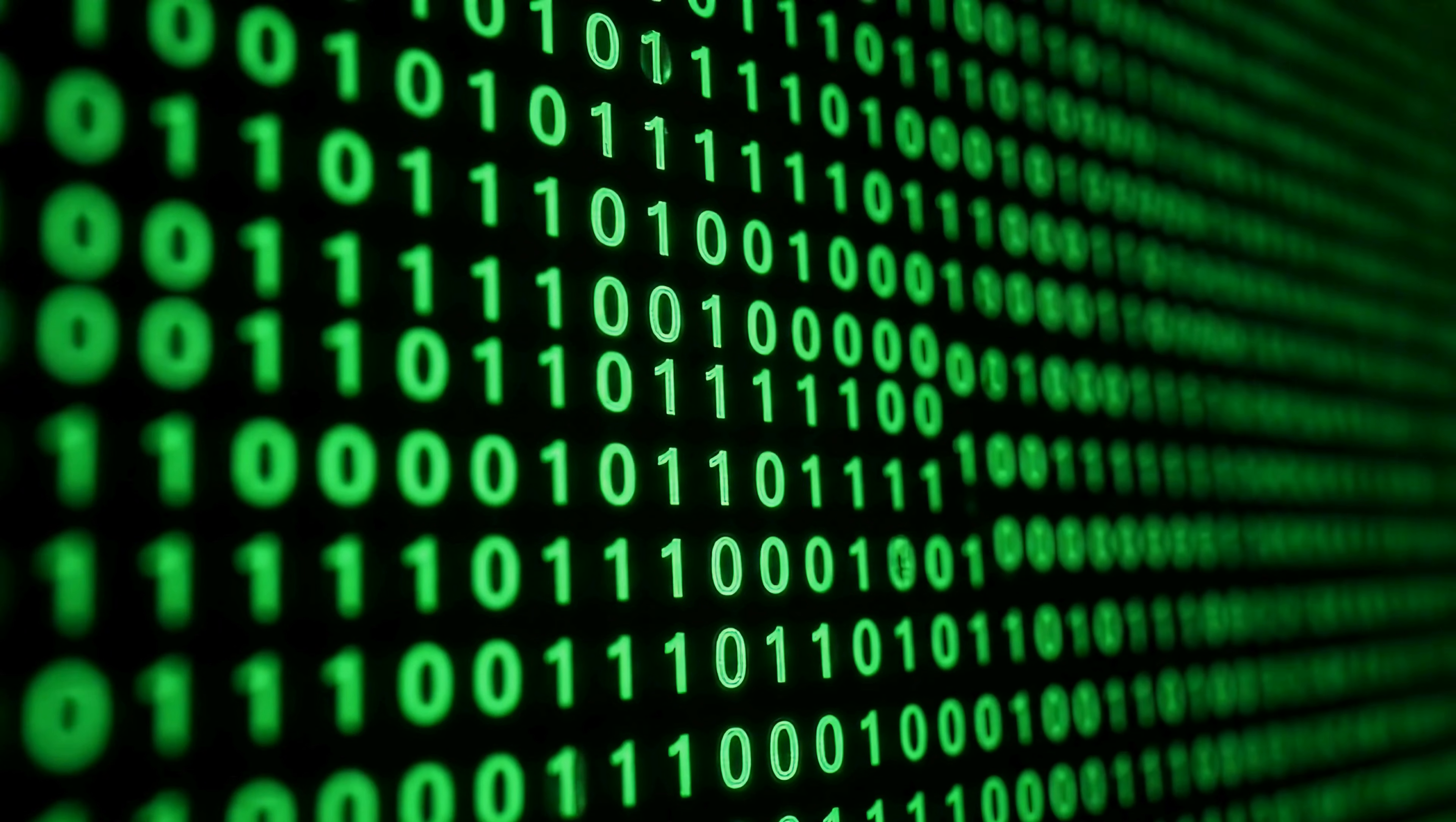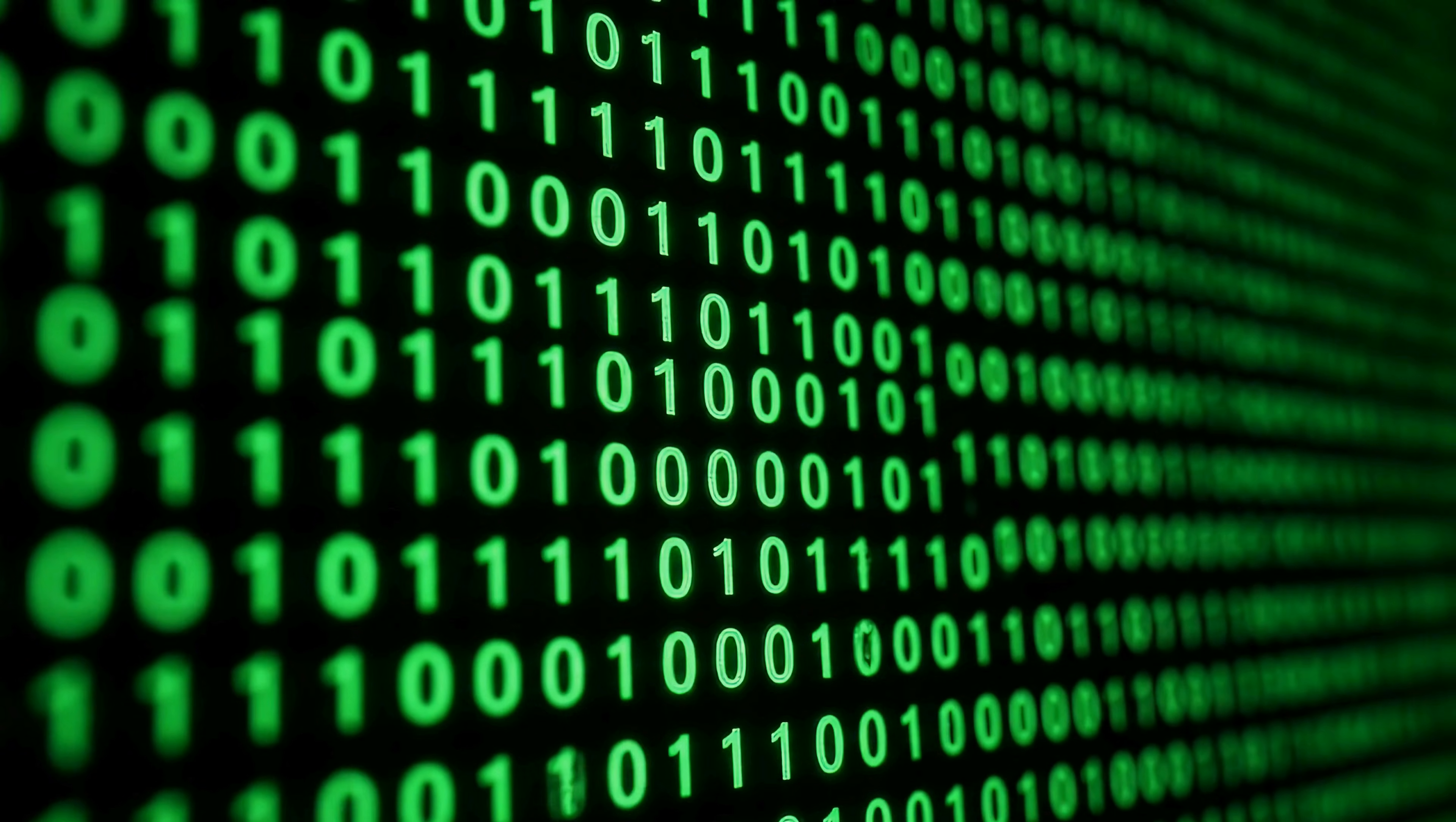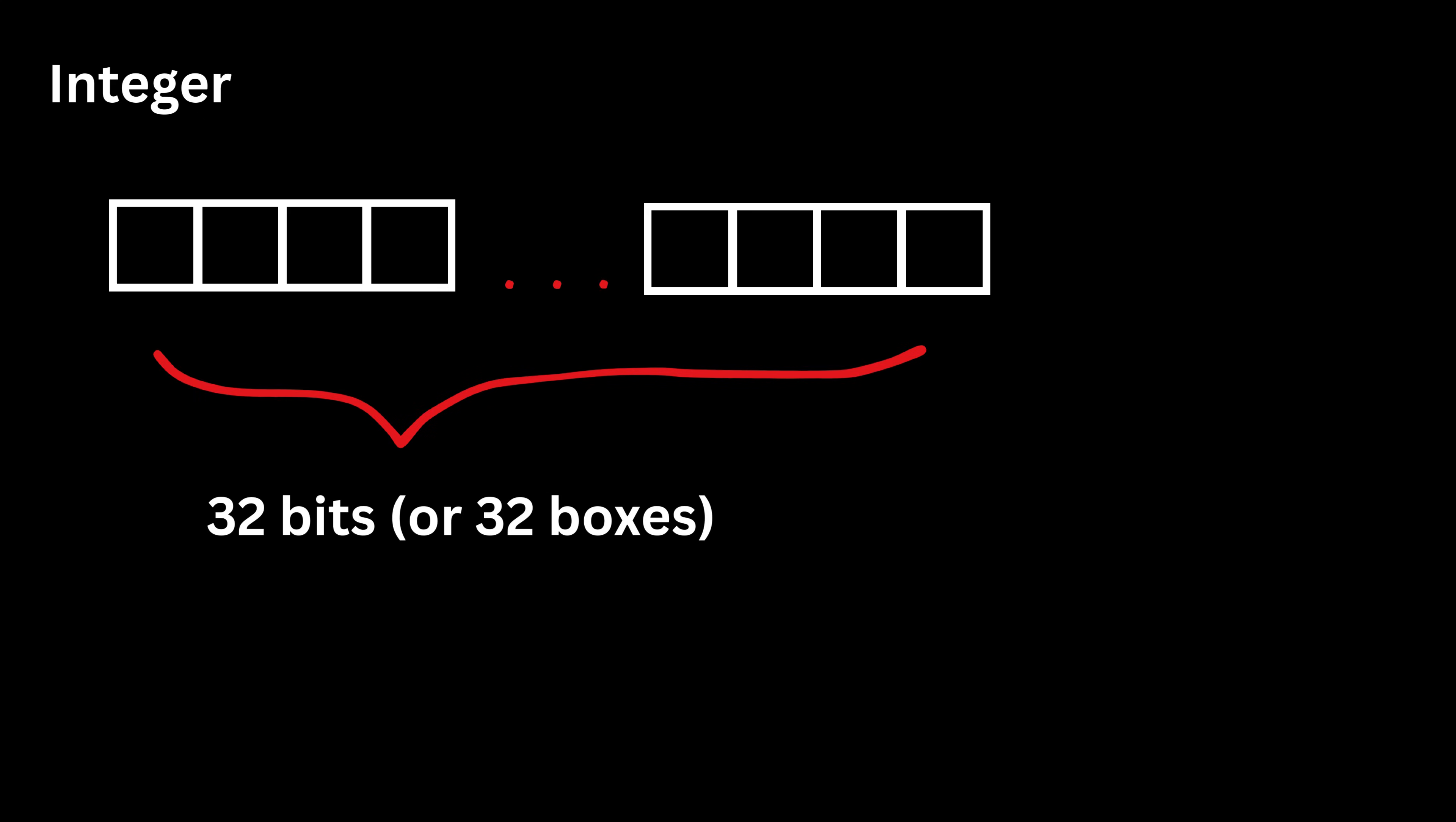Computers work using only zeros and ones, because all electronic circuits understand just two states, on or off. So every data type, no matter how it looks, must eventually be broken down into a pattern of zero and one bits. An integer, for example, is usually stored in a fixed layout such as 32 bits.